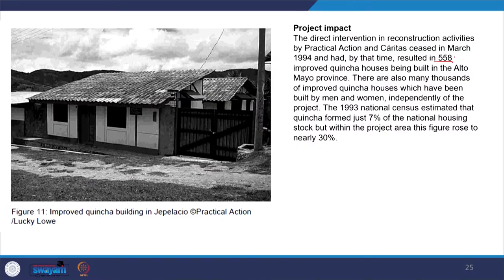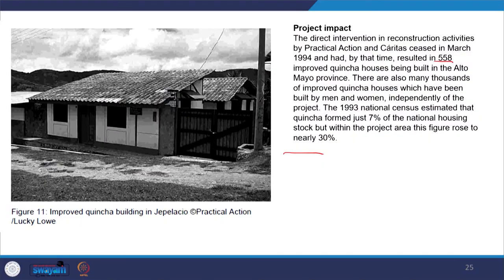The project's impact was significant. In 1994, only 558 improvised quincha houses had been built in the Alto Mayo province, forming just 7 percent of the national housing stock. But within the project area, this rose to nearly 30 percent. People understood the essence of these improvised techniques and gradually adopted them independently, demonstrating a case where tradition was improvised, accepted, and scaled up.